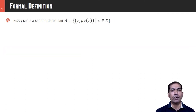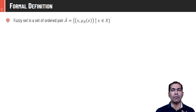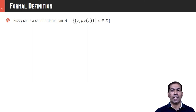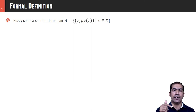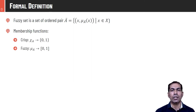Formally, a fuzzy set is defined as a tuple: Ā = {(x, μ_Ā(x)) | x ∈ X}. Here, Ā represents the fuzzy set — to distinguish it from crisp set A, we use bar notation. x is an element, and μ_Ā(x) represents the membership value of element x in fuzzy set Ā. The characteristic function χ (for crisp sets) can take only 0 or 1; μ (for fuzzy sets) can take any value between 0 and 1 — infinite possibilities.